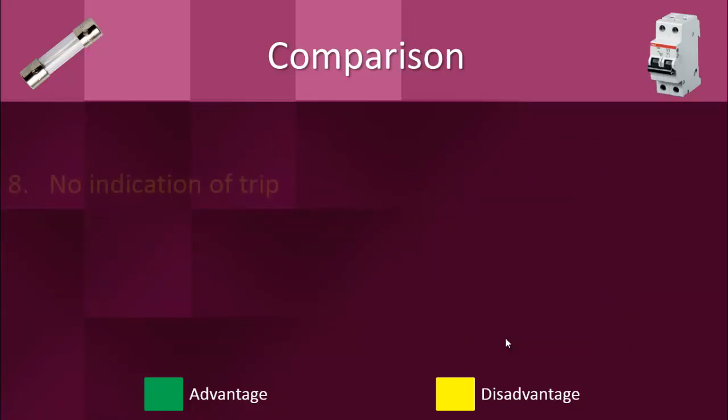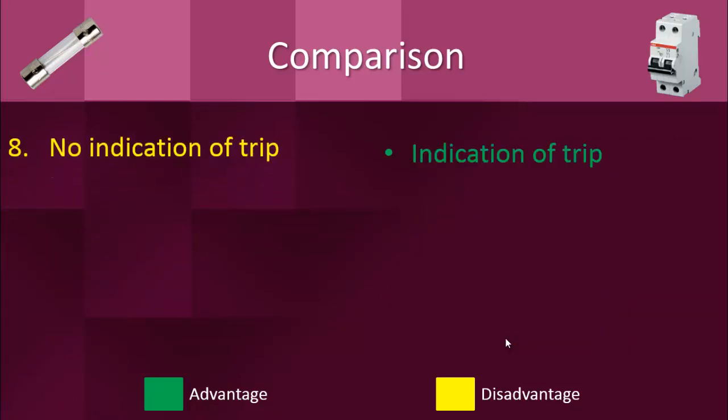Another demerit of the fuse is that there is no indication of a trip in the case of ceramic or metallic fuses. In the case of a glass fuse, you can see the wire is broken after a trip, but with ceramic or metal fuses no such indication is visible. Whereas with a circuit breaker, there is a clear indication of tripping by seeing the position of the lever — either on the trip position or the off position — so you can reset the breaker after removing the fault.